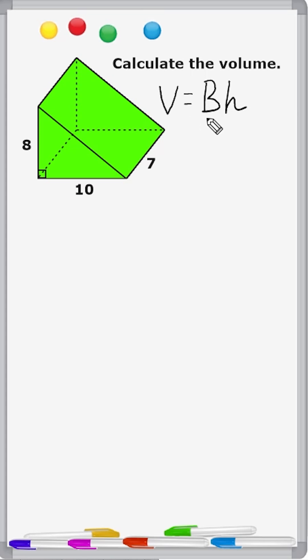Whenever you see a capital B in one of these formulas, it just means the area of that base. So basically we're taking this triangular base here, finding its area, and then multiplying it by this third dimension, which fills it up and makes it three-dimensional.